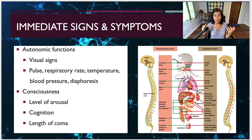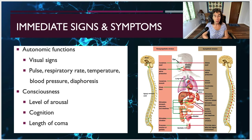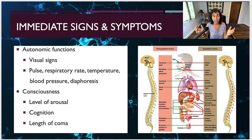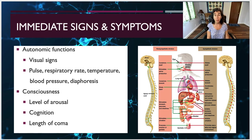The first set of signs and symptoms are those immediately present. We divide them into autonomic functions and consciousness. Autonomic functions include visual signs of trauma, pulse, respiratory rate, temperature, blood pressure, and diaphoresis. We're considering whether this person can return to a baseline of neurological functioning. The other thing we look at is consciousness: the level of arousal, the person's cognition, are they oriented, can they answer questions about who they are, where they are, when it is. And if they have lost consciousness, how long did that last, and how long might they have been in a coma?